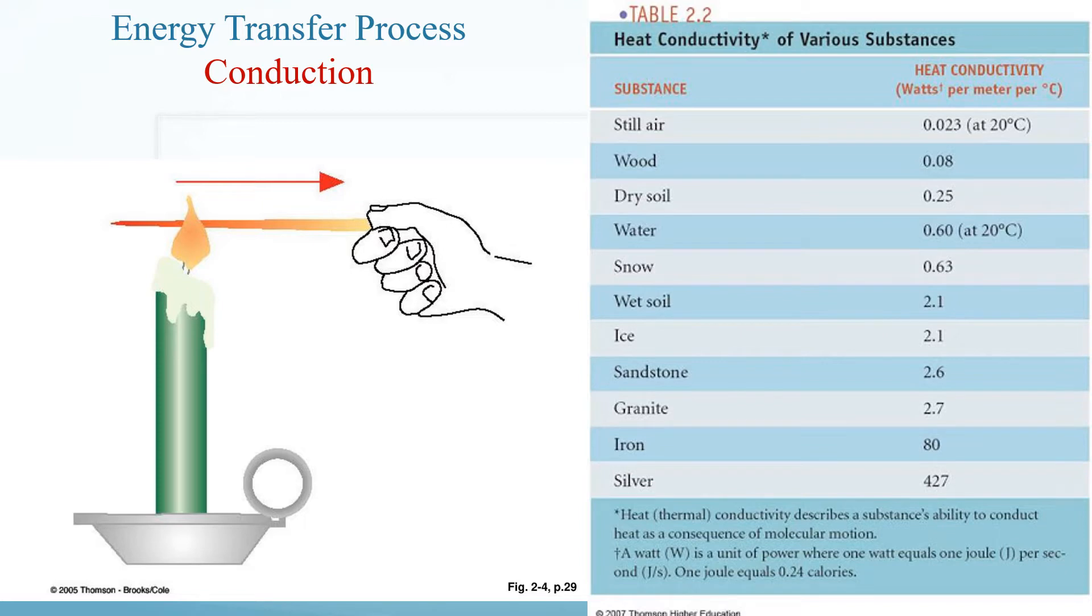These fast-moving molecules eventually cause the molecules of your finger to vibrate more quickly. Heat is now being transferred from the pin to your finger, and both the pin and your finger feel hot. If enough heat is transferred, your finger will become painful and you will drop the pin. The transmission of heat from one end of the pin to the other and from the pin to your finger occurs by the process called conduction.